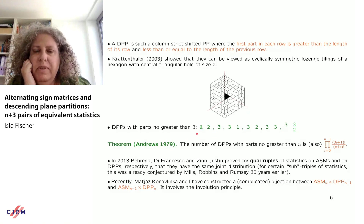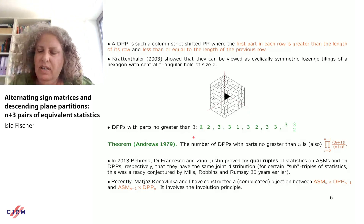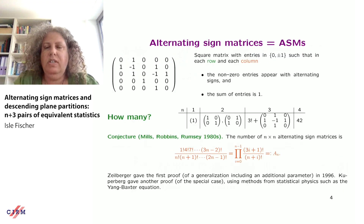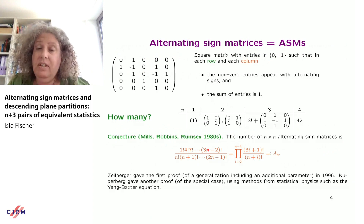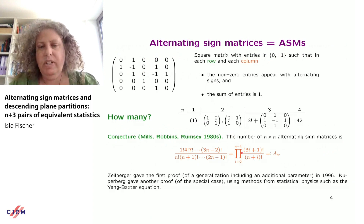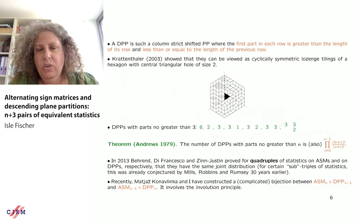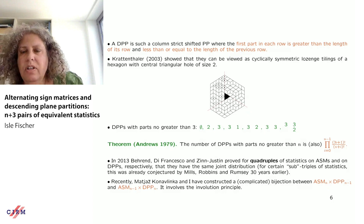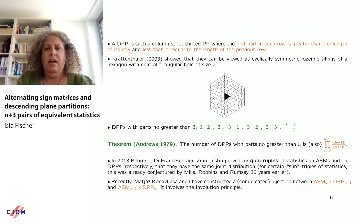I've listed all descending plane partitions with parts no greater than three. The empty descending plane partition also counts, and in total there are seven. Comparing to alternating sign matrices of order three, there are also seven — and that's not a coincidence. Andrews showed that the number of descending plane partitions with parts no greater than n is given by the same product formula as for ASMs.